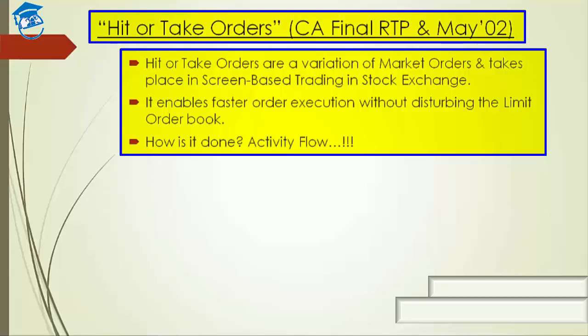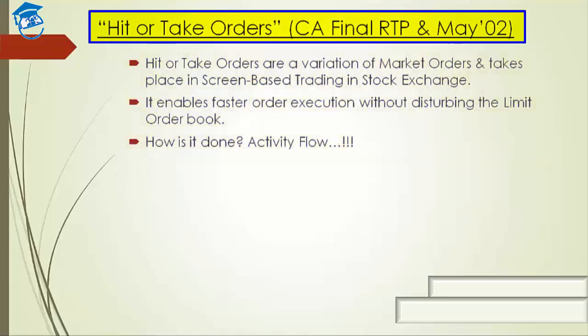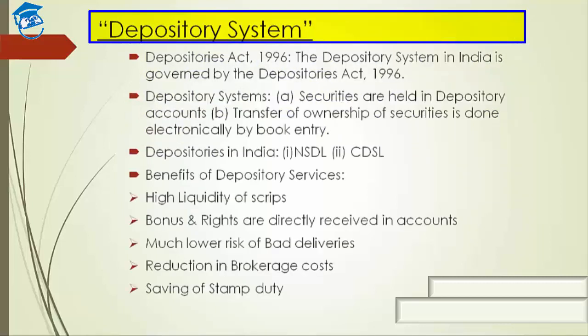Finally, all unexecuted orders of this type are automatically cancelled. Whatever you achieve goes with that touch line offer price or touch line bid price; your order gets matched with the hit or take order, and all those unexecuted orders are automatically cancelled and will not be stored in the order book at all. That's all about hit and take orders, as asked in the CA final examination for May 2002.